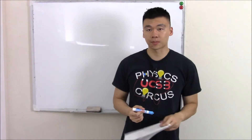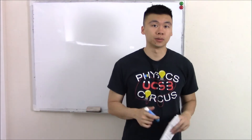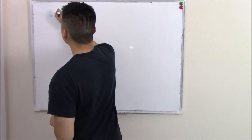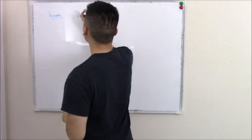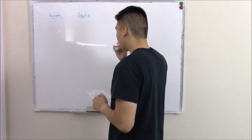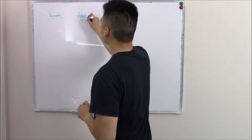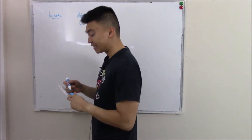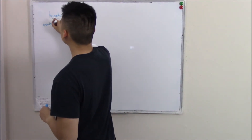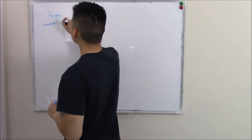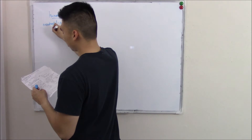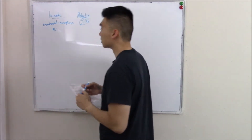In our last video, we finished talking about the adaptive immune system. To recap, we break up our immune system into the innate immune system and the adaptive. The adaptive has your T and B cells, which we talked about in our previous video. Now let's talk about our innate immune system. These cells are going to be your neutrophils, your macrophages, and your natural killer cells.